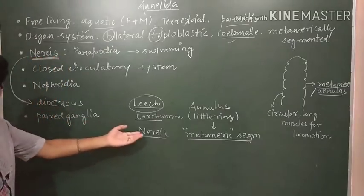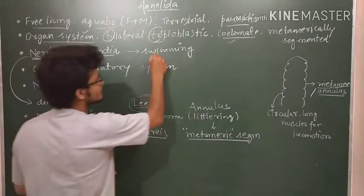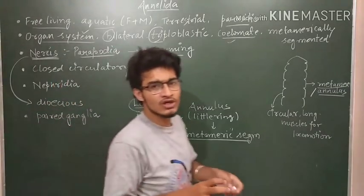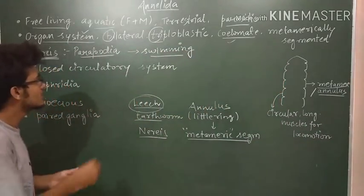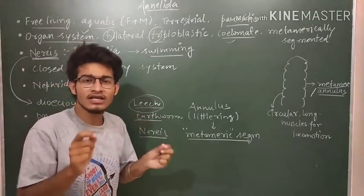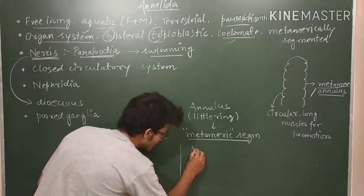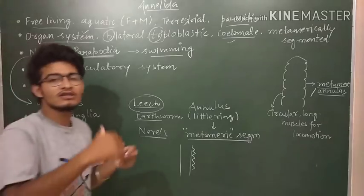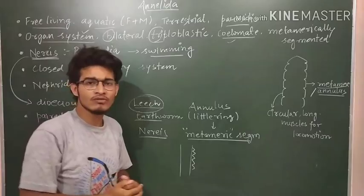Let's talk about Nereis. It is having parapodia for swimming. If some individual such as Nereis wants to swim, then there are some things which are present in the body that are known as parapodia. Parapodia are the little appendages. If this is the Nereis, there are some things like that - these are called parapodia, which help Nereis to swim.